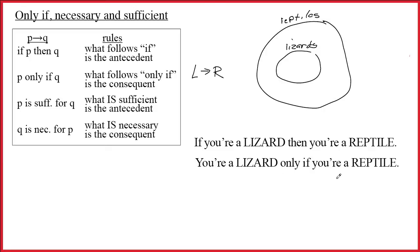But now let's think about the other one: you're a lizard only if you're a reptile. What that means is that you can be in the lizard set only if you're in the reptile set. The only way to get yourself into the lizard set is to pass through the reptile set. If you think about both of these sentences as just describing this set relationship, that's the best way to see how they're connected.